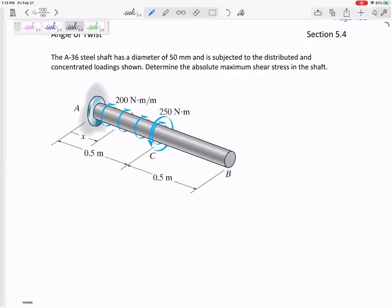So we've got this A36 steel. Let's give it a G of 75 MPa. It has diameter of 50 millimeters subjected to the distributed and concentrated loading shown to determine the absolute maximum shear stress in the shaft and angle of twist from A to B.